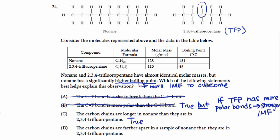In nonane, we have 1, 2, 3, 4, 5, 6, 7, 8, 9 carbons - we have 9 carbons versus 1, 2, 3, 4, 5 carbons.